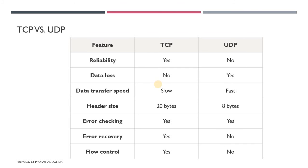However, error recovery is only provided by TCP — error recovery is not provided by UDP. So both protocols provide error checking, but if an error is found, the recovery and solution of that error is handled only by TCP. The next difference is flow control: TCP provides flow control and UDP does not.